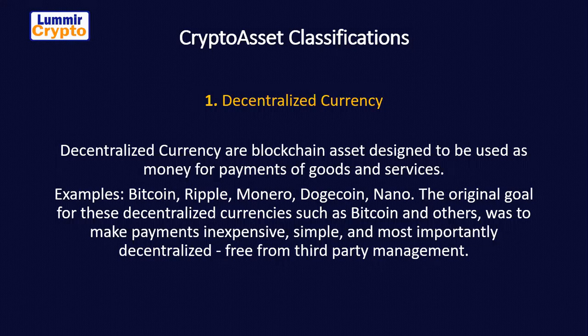We have decentralized currency, which is where cryptocurrency comes in. That is the classification where cryptocurrency belongs. Examples of decentralized currencies include Bitcoin — the master of crypto, the very first and ever-growing cryptocurrency in the world. Decentralized currencies are blockchain assets designed to be used as money for payment of goods and services, just like the name implies.